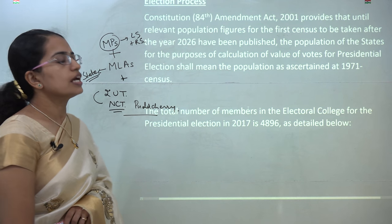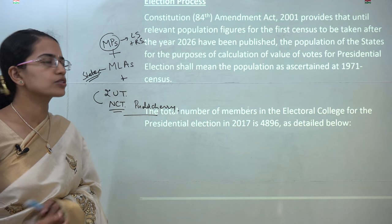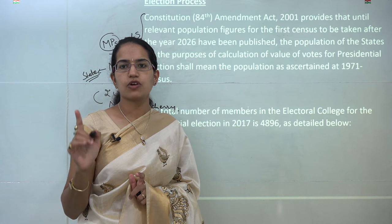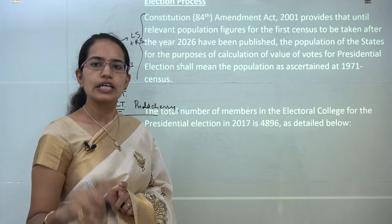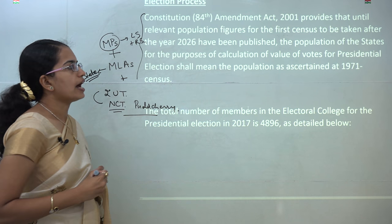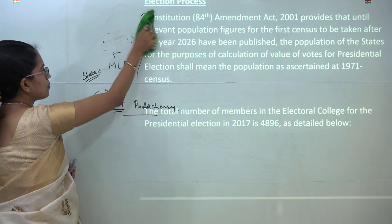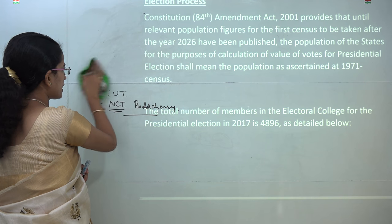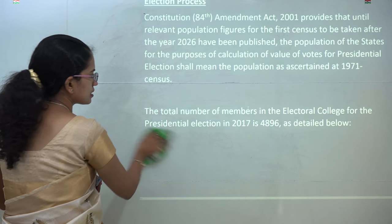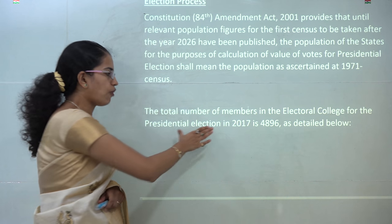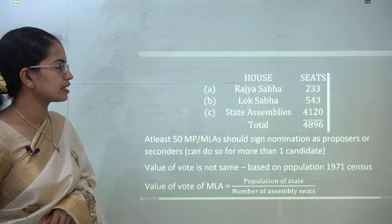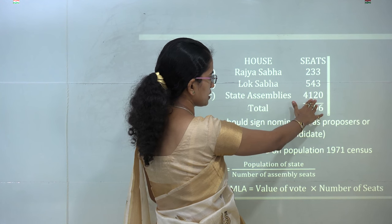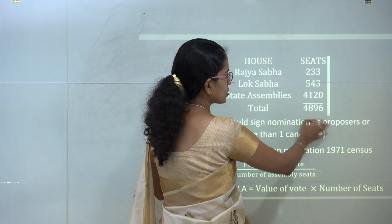The election process is laid down under the 84th Constitutional Amendment Act of 2001, which says that the population would be considered with 1971 as the base year. It would be revised only after 2026, after which the new census would be published and new population counted. Based on 2017 figures using 1971 as the base year, there are 233 members of Rajya Sabha, 253 members from Lok Sabha, and 4,120 MLAs from state assemblies, giving a total of 4,896 votes.